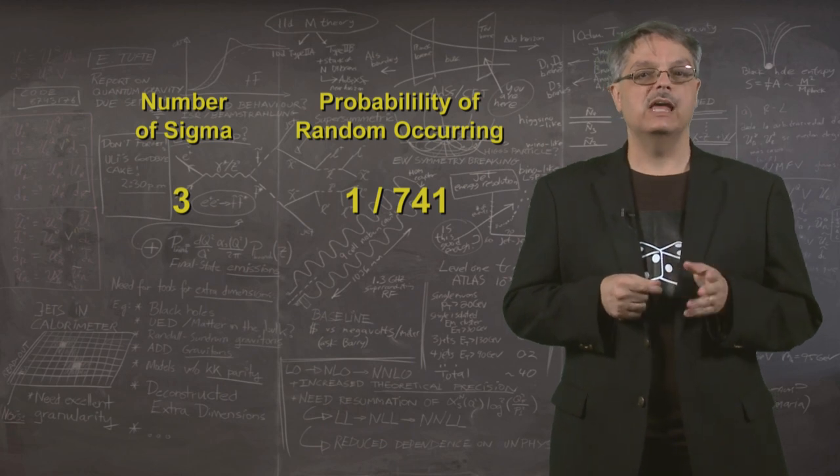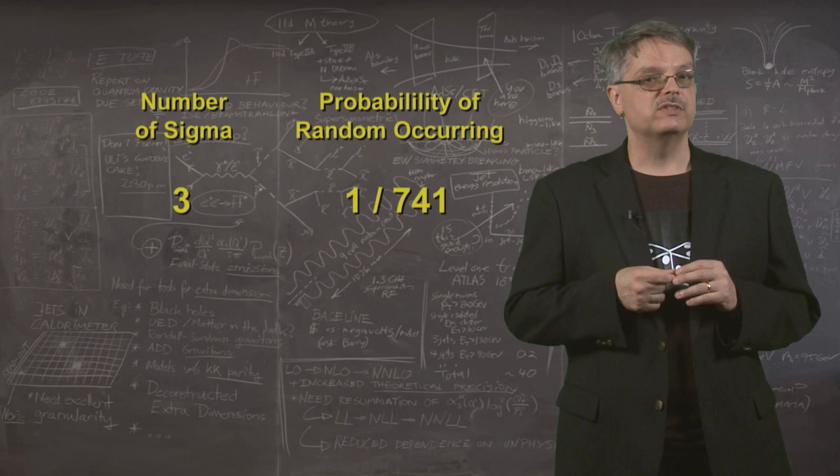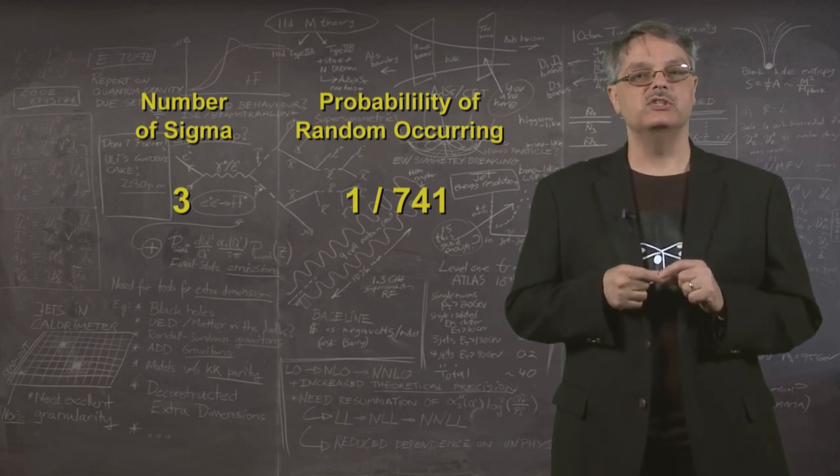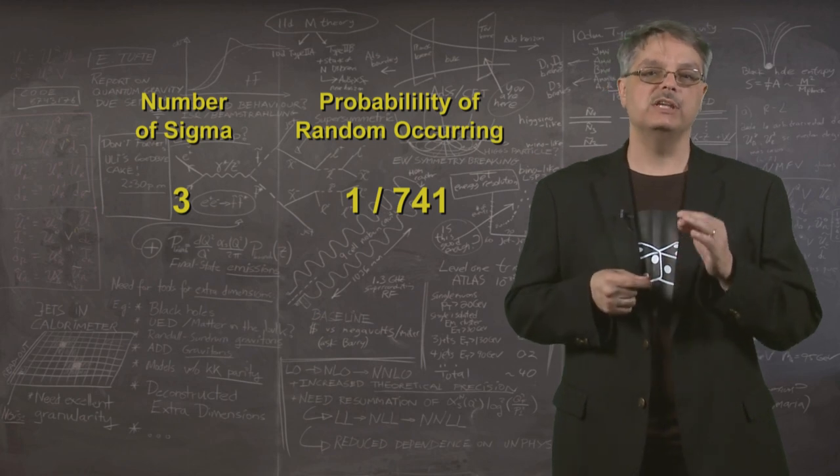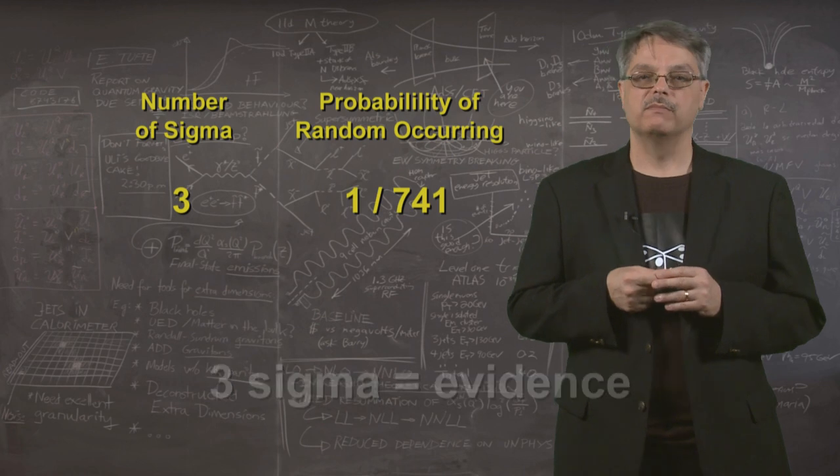3 sigma means that this will happen by chance about one time in 740. That's rare enough to say that what you saw is very unlikely, and this is the official threshold in particle physics to say that you have some evidence that maybe something new is occurring. 3 sigma is defined to be evidence.